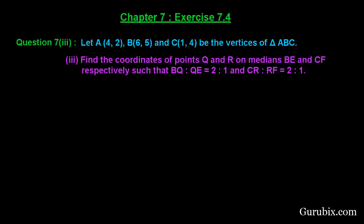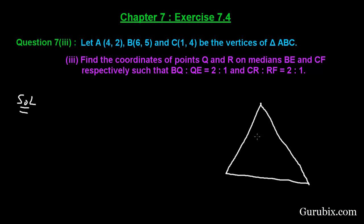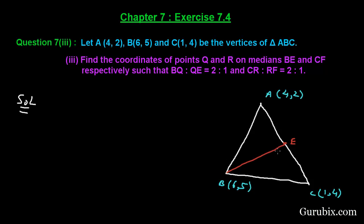This is a very interesting question — let us solve it. First of all, let us draw a rough figure of triangle ABC. Here we have the triangle ABC with coordinates of A as (4,2), B as (6,5), and C as (1,4). We are given a median BE from vertex B to side AC, so here we have a point E. The median bisects the opposite side from the vertex.